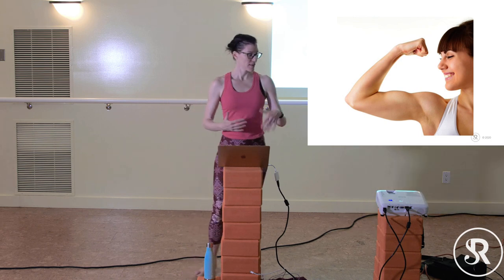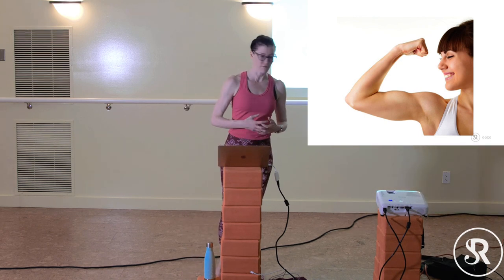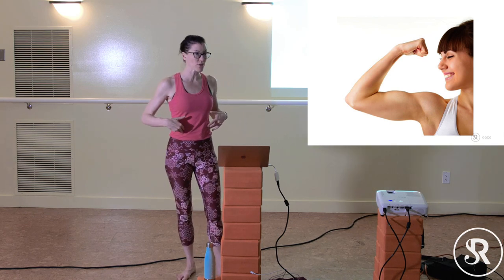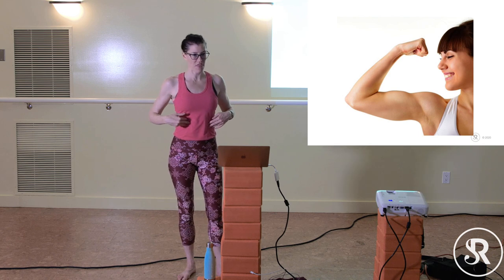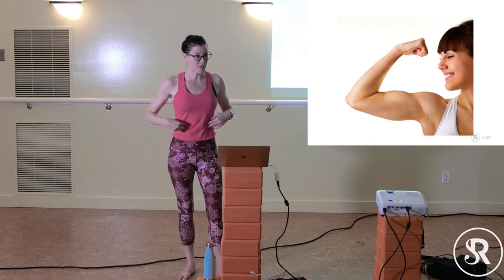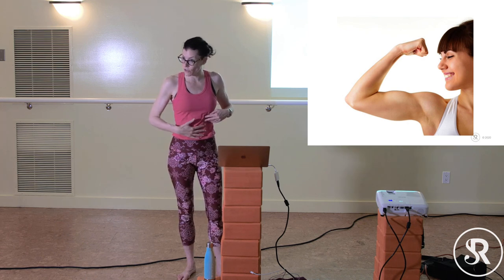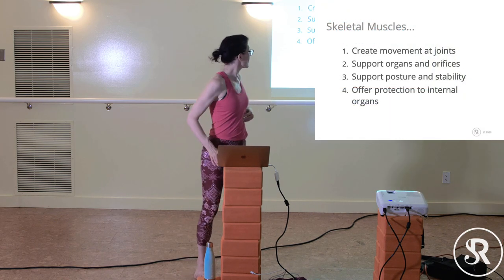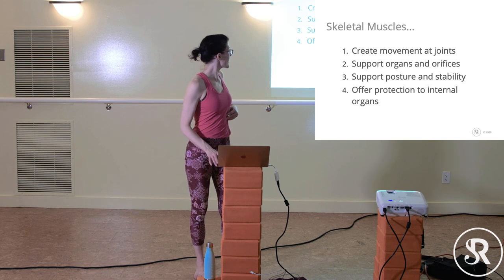Skeletal muscles allow you to control what comes in and out of your body, and they offer some protection — like your abdominals, though they're very thin. Your spine and ribs are much better for protection, but there is a layer of muscle over your internal organs. They create joint movement, support organs and orifices, maintain posture and stability, and offer some protection.